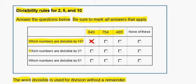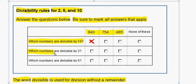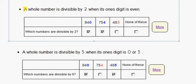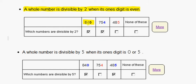Next is asking us which numbers are divisible by 2. We know that a whole number is divisible by 2 when its ones digit is even. So, 840 ends in 0, which is an even number, so it is divisible by 2.